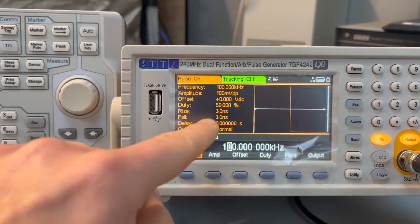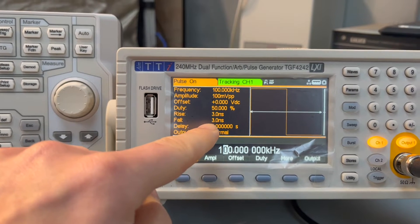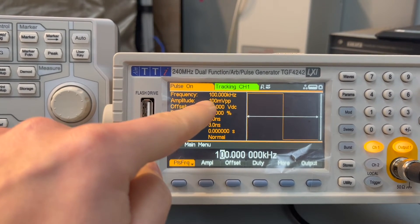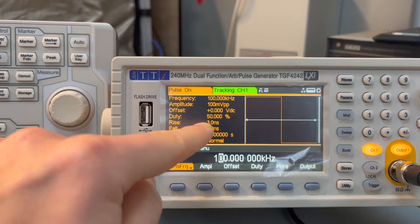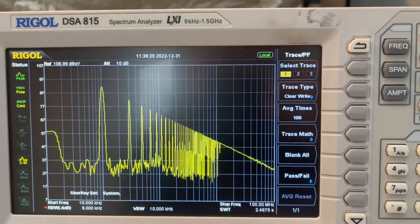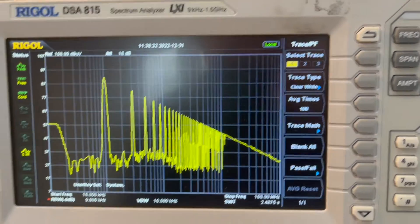Now let's have a look at the impact of the rise time. In the first case, we have 3 nanoseconds rise and fall time. We keep the switching frequency still the same, 100 kilohertz, duty ratio 50%. This is our spectral analysis.